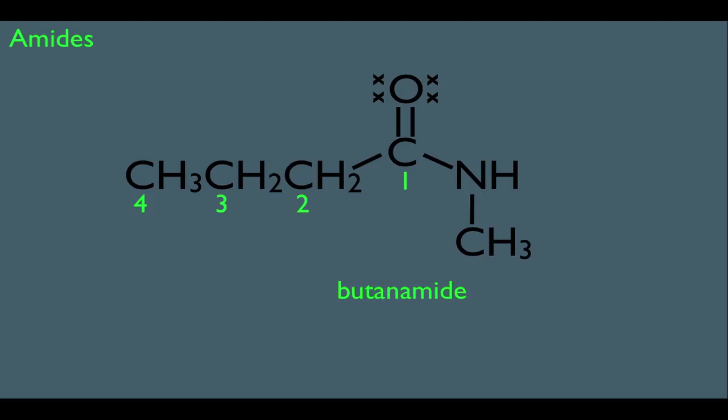And what we do to call out that methyl there connected to the nitrogen is we treat it like a substituent, and we say that the substituent is directly connected to the nitrogen. So we would call this out by saying N-methylbutanamide. Notice this is telling us that on the nitrogen there is a methyl, and butanamide is telling us that it's a 4-carbon long amide.